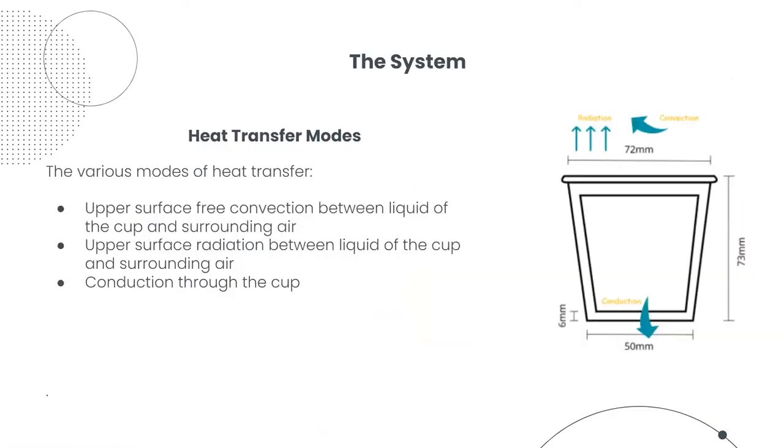Now, let's zoom in into what actually happens in a paper cup. Looking at the various modes of heat transfer from the paper cup, there is upper surface free convection between liquid of the cup and the surrounding air, upper surface radiation between the liquid and surrounding air, and there is conduction through the cup.